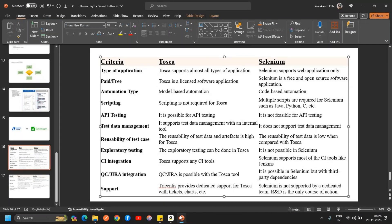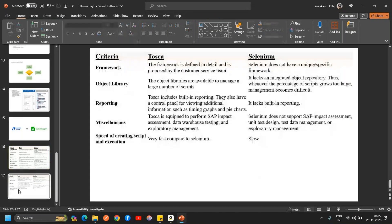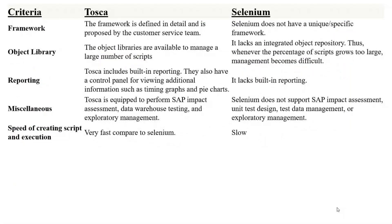Regarding CI integration, Tosca supports CI tools like Jenkins, and Selenium also supports Jenkins. With Tosca, you can also integrate with Quality Center or Jira using an add-on — whatever test case status is in Tosca gets updated directly into your ALM or Jira, with no need to manually update. Tricentis provides dedicated support for Tosca with tickets and chat.